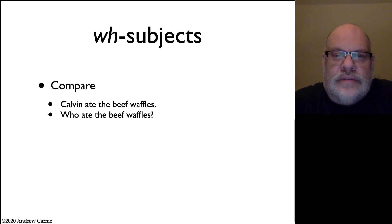Look at these two sentences. Normally, when you do WH movement and you have subject-aux inversion, you get do insertion. What did Bill eat, you get did eat. But when you have a WH subject, you don't get do insertion. You don't get who did eat the beef waffles, you get who ate the beef waffles. So there appears to be no evidence at all for subject-aux inversion.